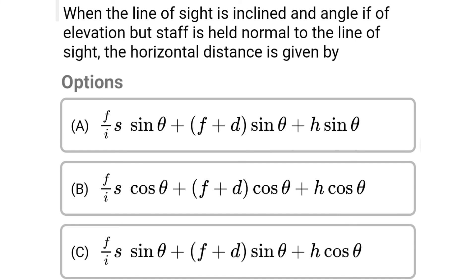Next question: when the line of sight is inclined at the angle of elevation but staff is held normal to the line of sight, the horizontal distance is given by. Option A: (f/i)·s·sinθ + (f+d)·sinθ + h·sinθ. Option B: (f/i)·s·cosθ + (f+d)·cosθ + h·cosθ. Option C: (f/i)·s·sinθ + (f+d)·sinθ + h·cosθ. Option D: (f/i)·s·cosθ + (f+d)·cosθ + h·sinθ. The correct answer is option D: (f/i)·s·cosθ + (f+d)·cosθ + h·sinθ.